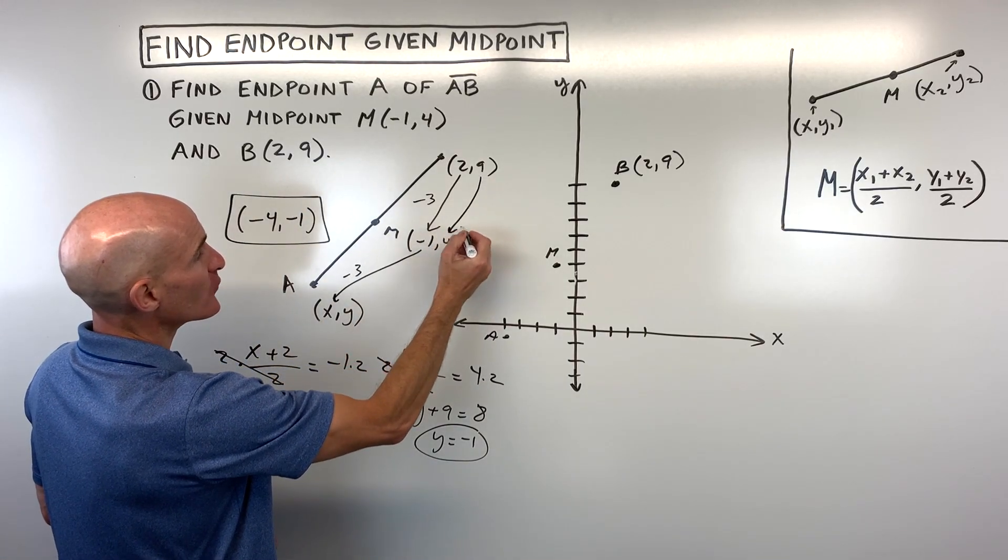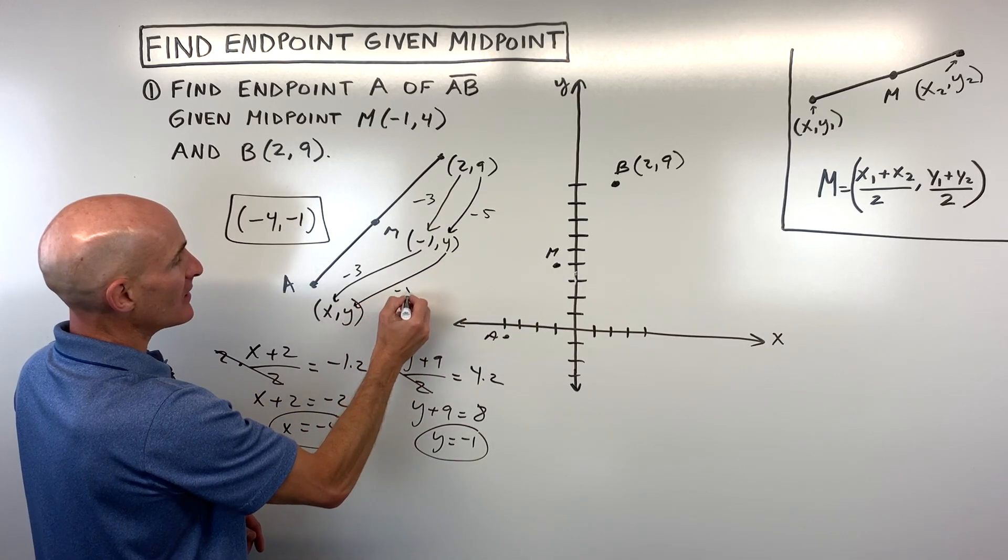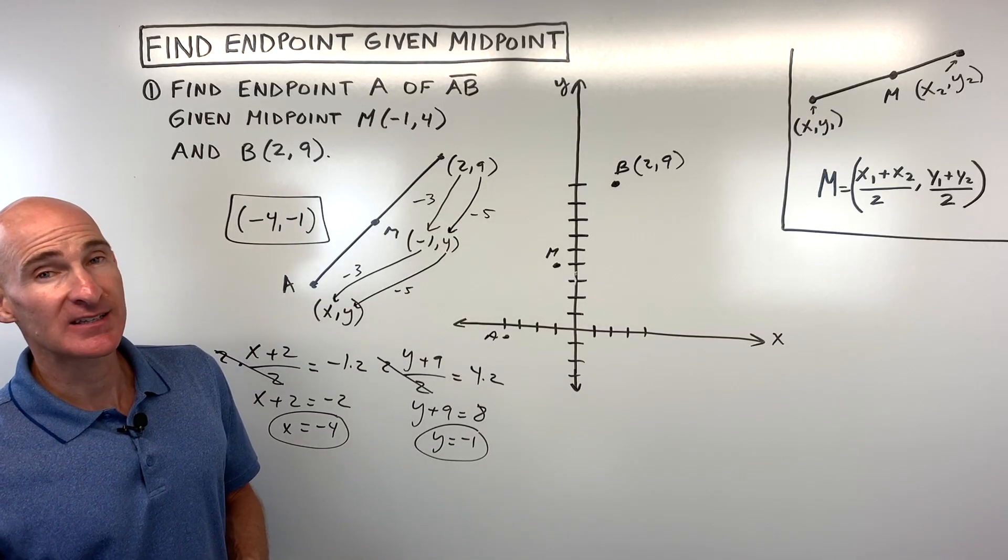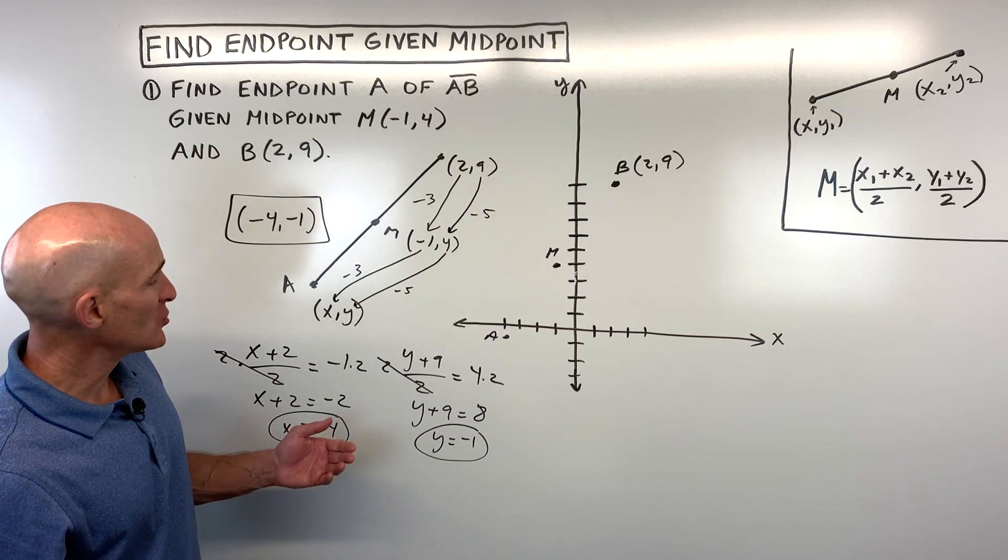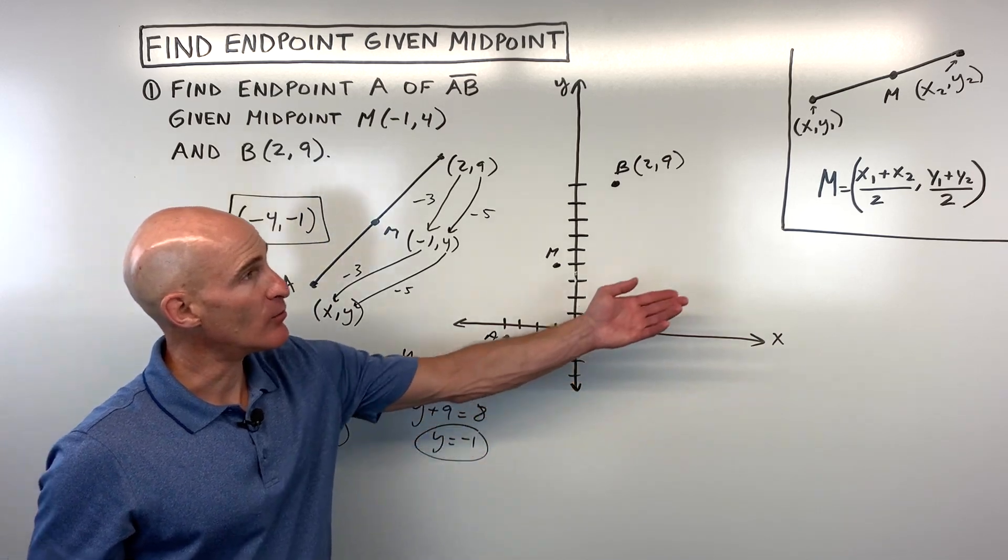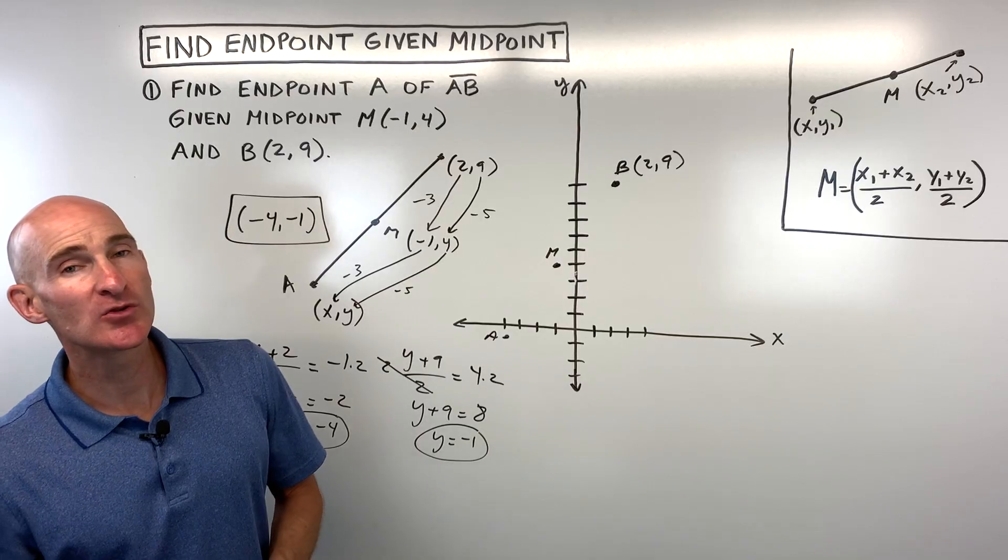Let's do the same thing for the Y. So how am I getting from nine to four? I'm subtracting five. So if I subtract five again, what's four minus five? Negative one. Now this is good for taking like a standardized test. But usually when you're doing it like on a test in your class, your teacher's going to want to see the use of the midpoint formula here. So let's take a look at another example. See if you can do this one on your own.